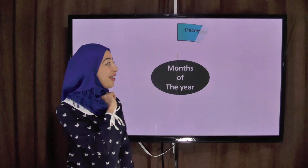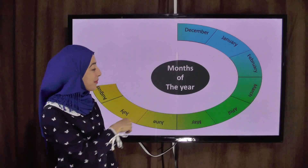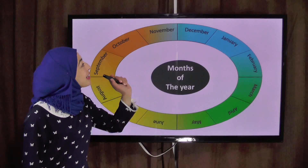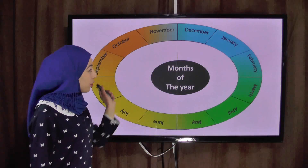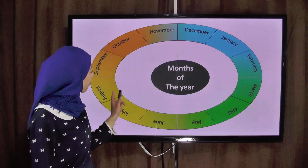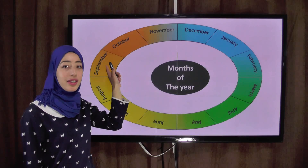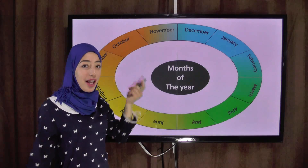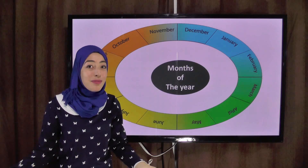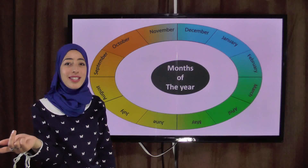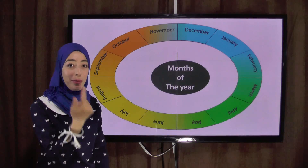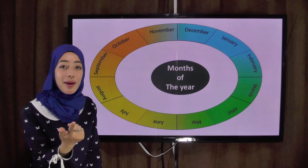Months of the year — here we have the months. Which month do you want us to start with? We start with September, because our school year starts in September. So let's start. September — repeat after me: September.